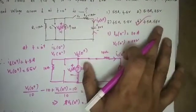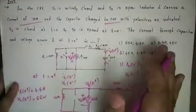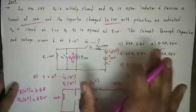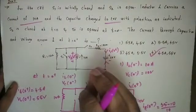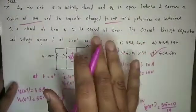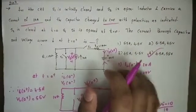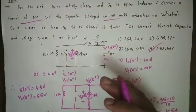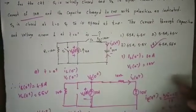So the answer is 4.5A and 55V. This concludes our discussion. Let's close the transient analysis topic covering RL, RC, and RLC. Next we will discuss AC analysis. If you want more videos, share with your friends and get subscribed. Thank you for watching, and we'll catch up in the next video.